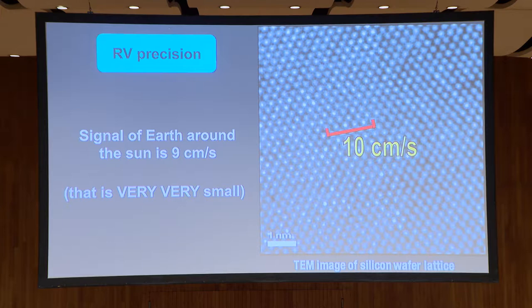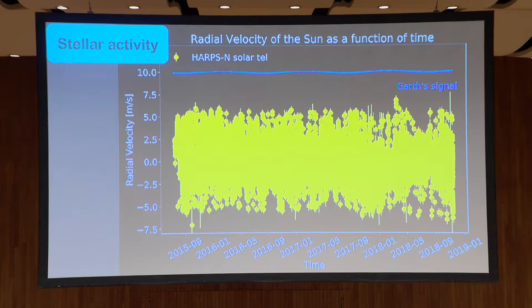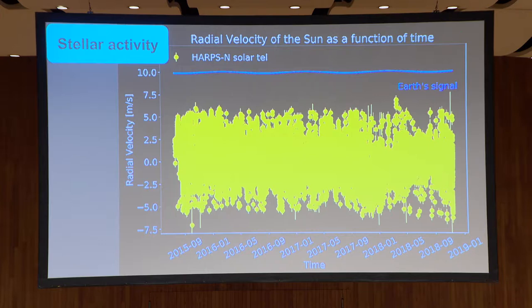This level of detection — measuring something literally atoms across — is going to require a whole new regime of stability in temperature, pressure, and how we're measuring the lines. Even if we develop the capability to measure things at the nine to ten centimeter per second regime, that's going to be dwarfed by the activity of the star itself. This is data from the Sun using the HARPS North spectrograph showing activity due to spots, flares, pulsations, oscillations, and granulation effects. The signal of the Earth is absolutely swamped by that amplitude.